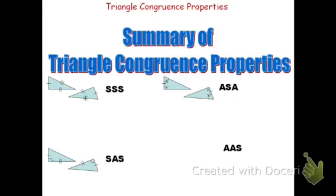The last method is AAS. In AAS you have two pairs of congruent corresponding angles and one pair of congruent sides. The S at the end tells me the side is not in between the angles — this is angle-angle-side congruence. In between the angles marked with the one tick mark and the two tick marks, the side that is congruent is not there. Instead, it is away from one of those congruent angles. This is angle-angle-side.